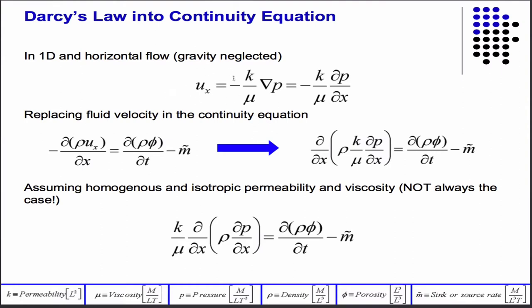So for the velocity then, we substituted in Darcy's Law. We substitute Darcy's Law into the conservation of mass, and then we get the pressure diffusivity equation, or at least one version of it.